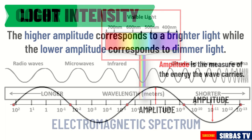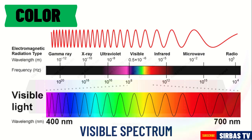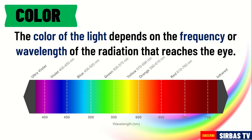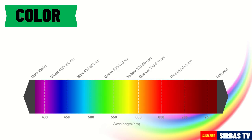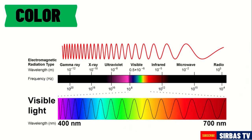The next characteristic of light is color. Visible light is the only electromagnetic wave that can be seen by the human eye. The color of light depends on the frequency or wavelength of the radiation that reaches the eye. Visible light falls in the wavelength range of 400 to 750 nanometers. For example, a wavelength between 450 to 500 nanometers corresponds to the color blue. When the wavelength is shorter than 400 nanometers, it is called ultraviolet, and if it has a wavelength greater than 750 nanometers, it is called infrared.